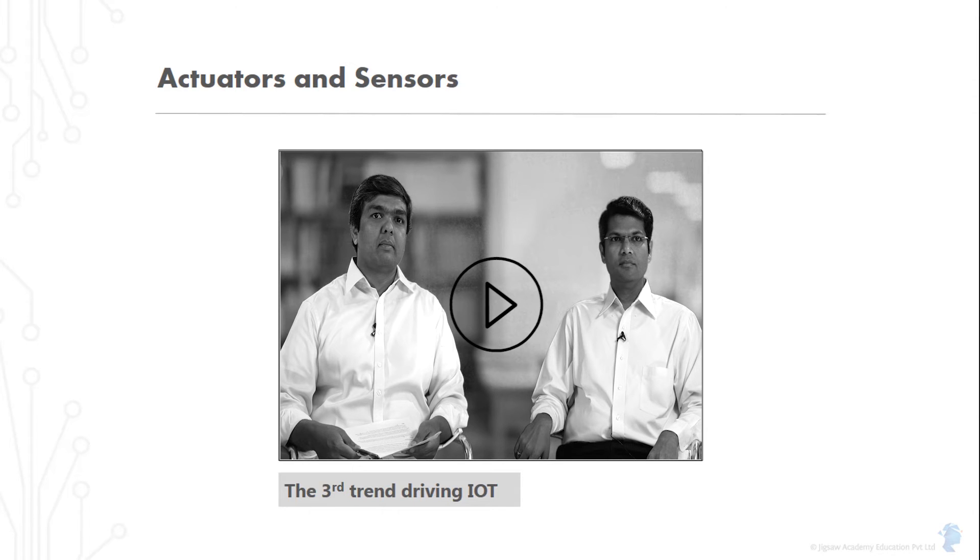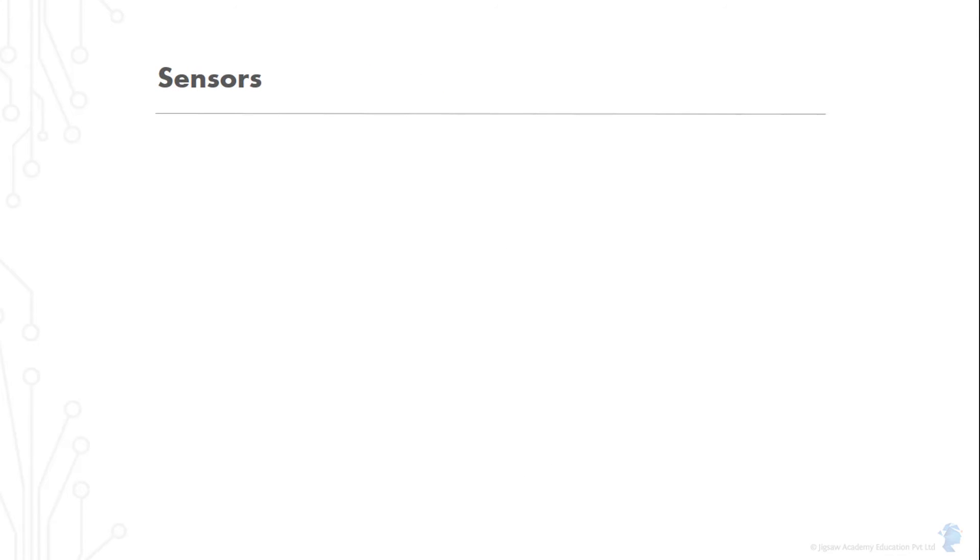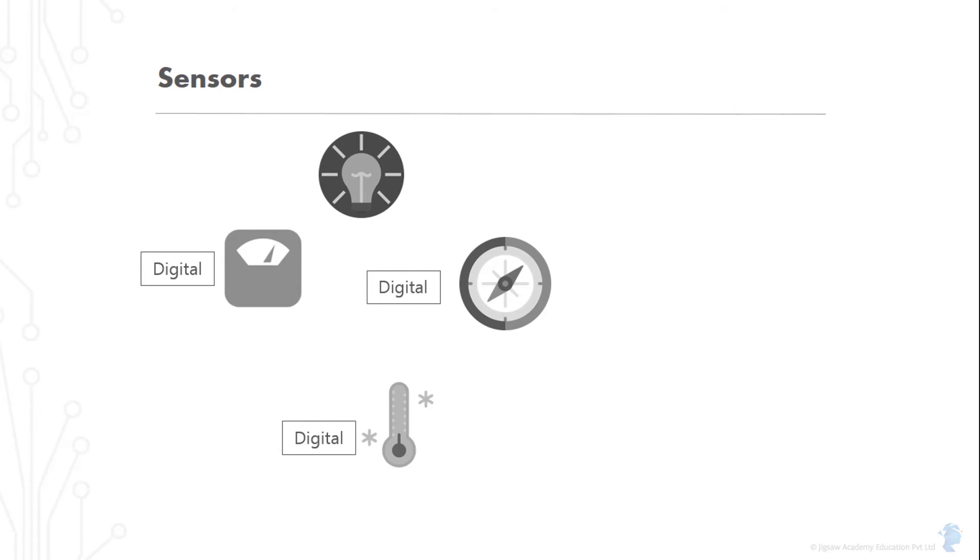Sensors allow a computer to sense the environment around it and actuators allow it to act on it. Over the last few decades, measuring devices have steadily been going digital. Think of the weighing machine, the thermometer, the compass. Each of this is now preceded by the word digital, as in digital scale, digital thermometer, digital compass, etc. And of course, once something becomes digital, it can be connected to a processor.